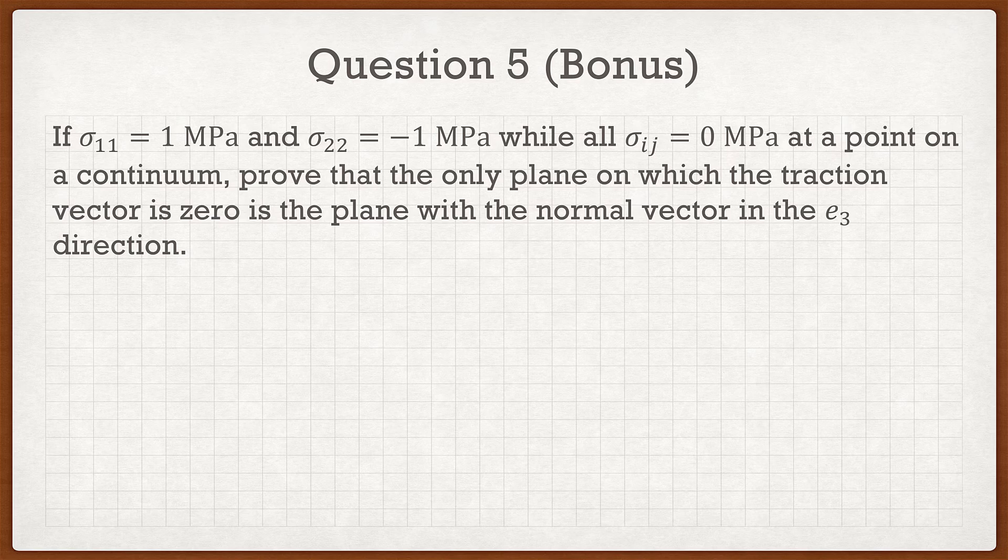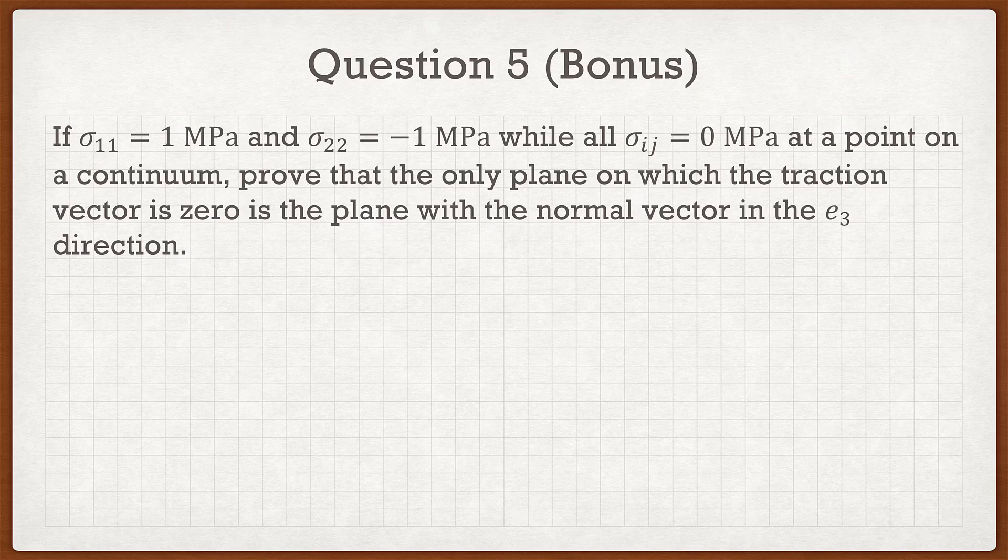So the question says: if σ₁₁ = 1 MPa and σ₂₂ = -1 MPa while all other σᵢⱼ = 0 MPa at a point on a continuum...